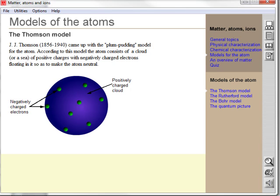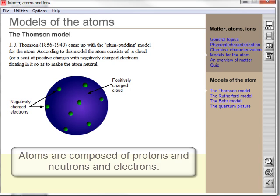Once atoms were found, it became evident that atoms were composed of protons, neutrons, and electrons.